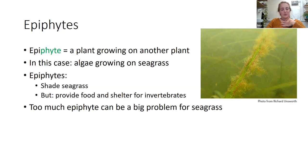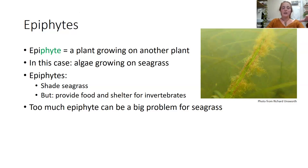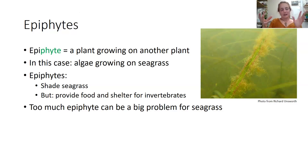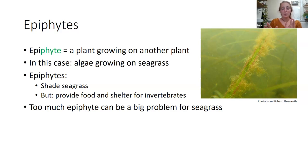Moving on to epiphytes — epiphyte simply means a plant growing on another plant, in this case algae growing on seagrass. Epiphytes can be a bit of an issue: when there's a lot of nutrient input from farming or sewage, algae can bloom, growing on the seagrass and shading it so the seagrass struggles to photosynthesize and may die off. We want to look at epiphyte load as an indicator of potential problems. However, epiphytes aren't all bad — they're part of a natural ecosystem, providing food and shelter for invertebrates.